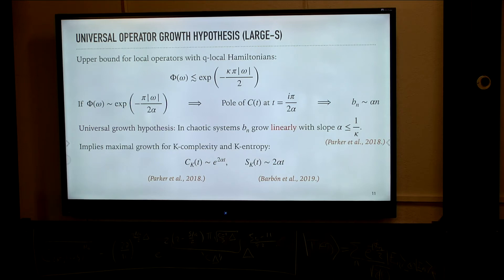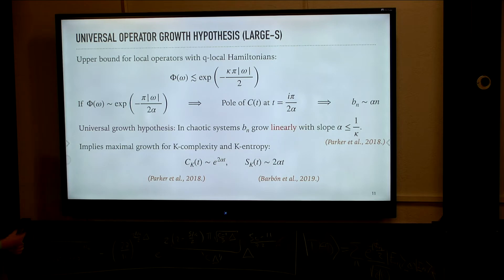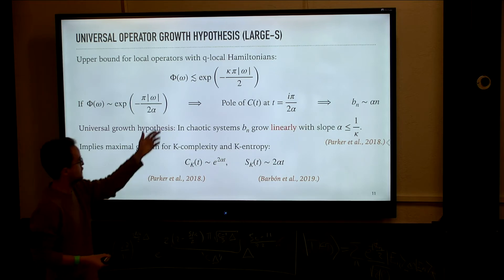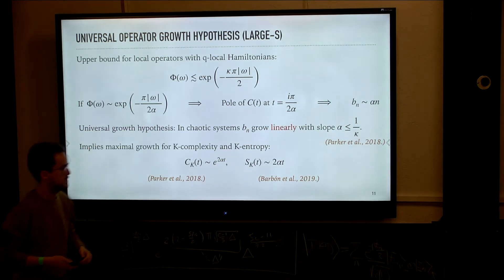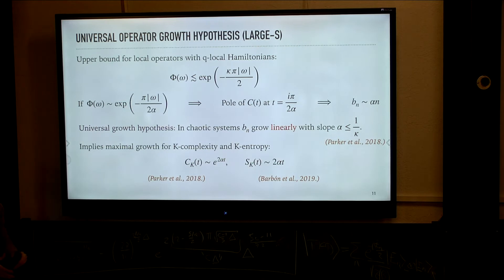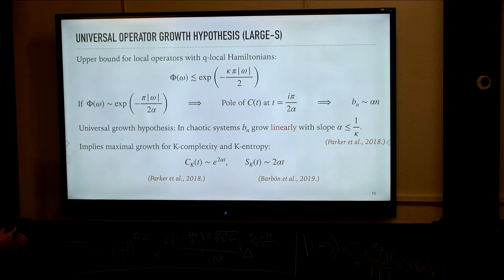The universal growth hypothesis they propose is that in chaotic systems, the Lanczos coefficients grow as fast as they can — which is linear — with a slope bounded from above by some geometrical factor that is system-dependent. This is the expectation for chaotic systems in the thermodynamic limit: they will display a linearly growing Lanczos sequence.